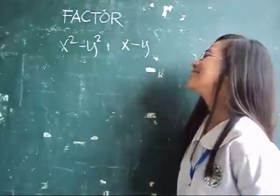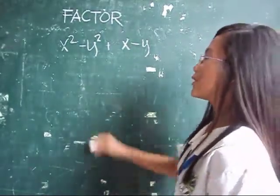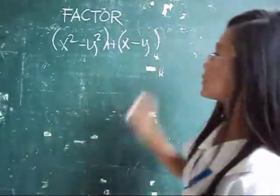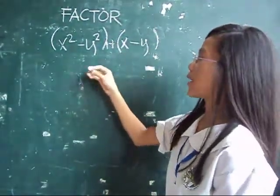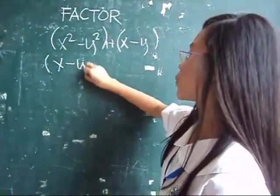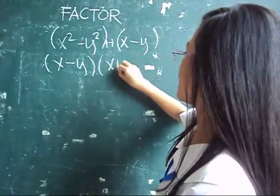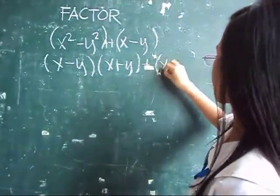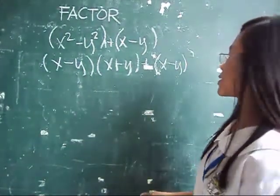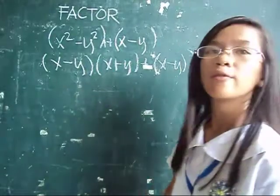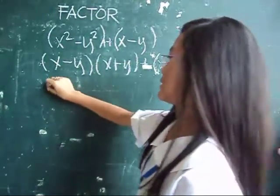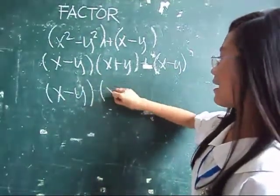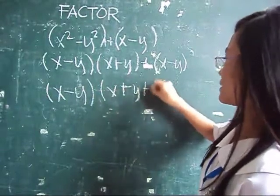Factor x squared minus y squared plus x minus y. Factor this by grouping. The factors of x squared minus y squared are x minus y and x plus y. Then copy x minus y. Since x minus y is common, factor it out. The other factor is x plus y plus 1.